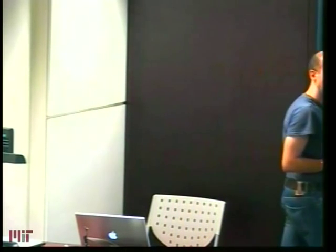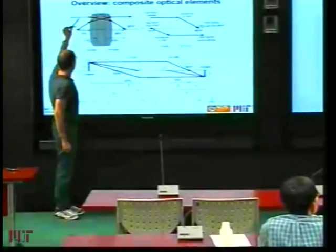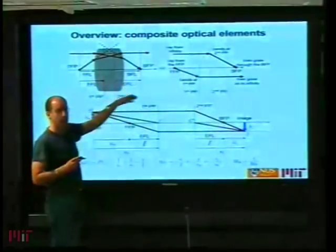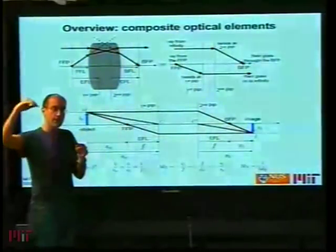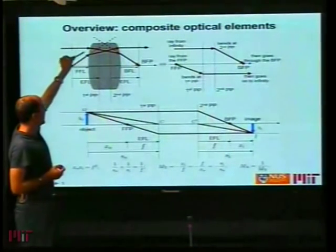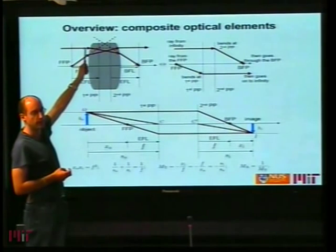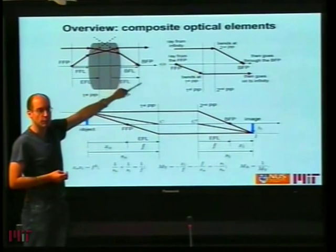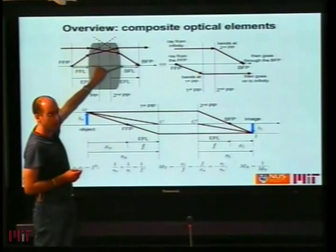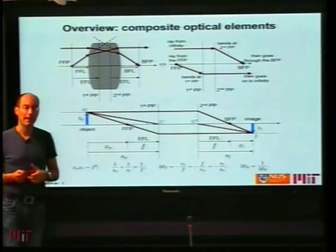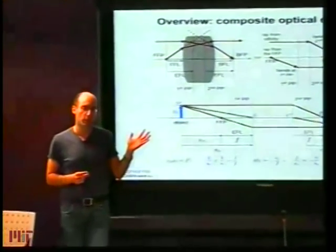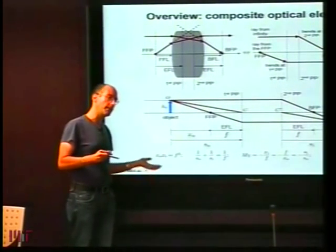The primary reason we did this was to define the concept of principal planes. The principal planes are basically the locations where the rays bend at once. In a thick optical element — whether a thick lens or a composite of several lenses in tandem — rays will bend several times. But if you take a parallel ray from infinity, after however many times it bends, it comes out at a final propagation angle. The principal plane is what you obtain by extending the incoming ray and the outgoing ray to find where they meet. Within the paraxial approximation it is a plane, though in general it is actually a curved surface.